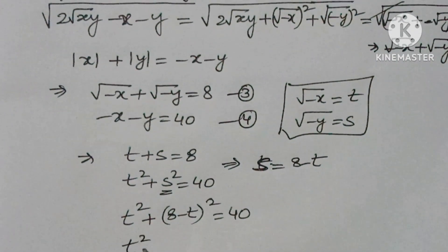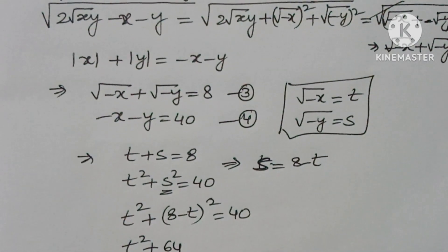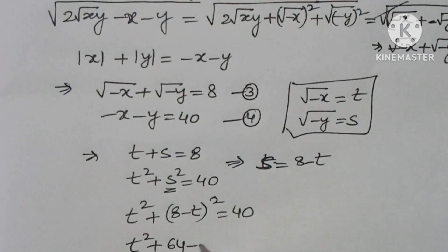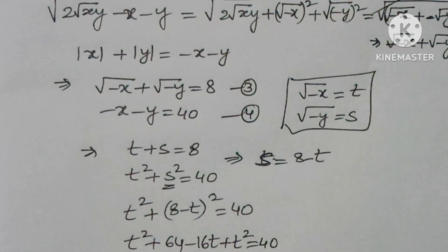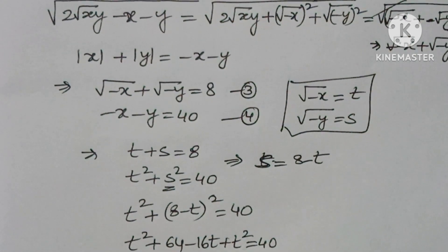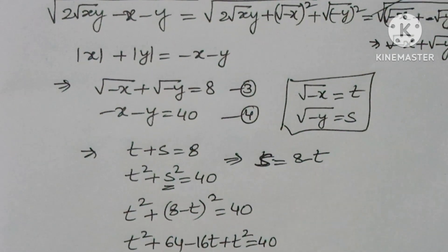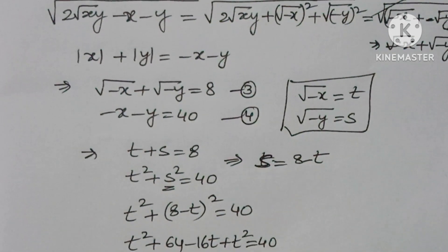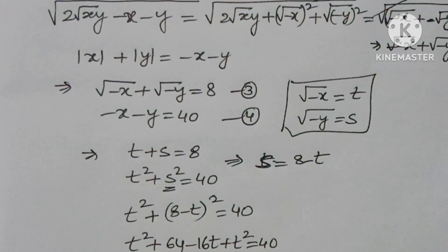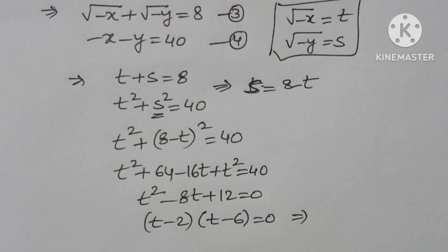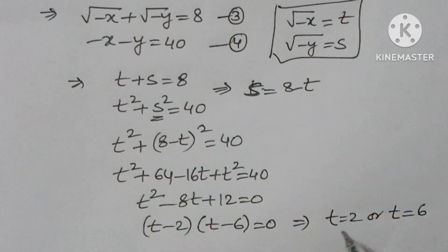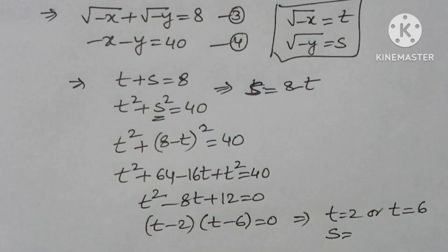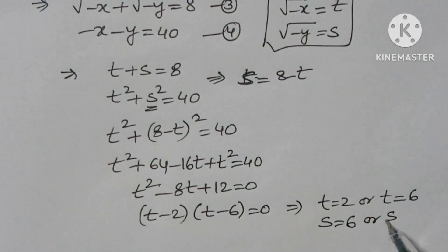Expanding: t² + 64 − 16t + t² = 40, which simplifies to 2t² − 16t + 24 = 0, or t² − 8t + 12 = 0. Factoring: (t − 2)(t − 6) = 0. So t = 2 or t = 6, giving s = 6 or s = 2 respectively.